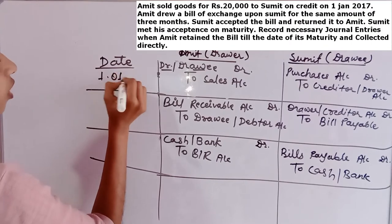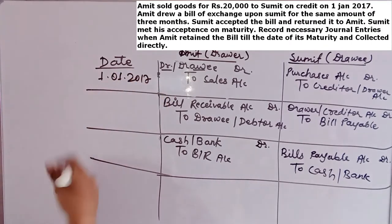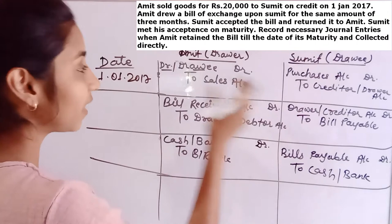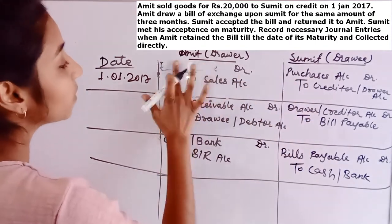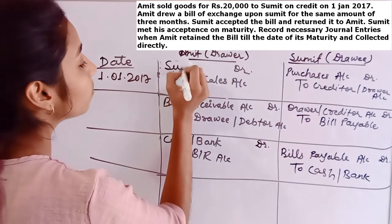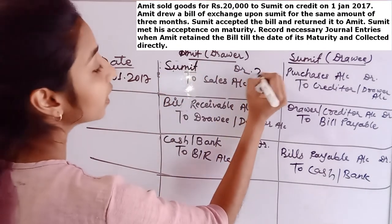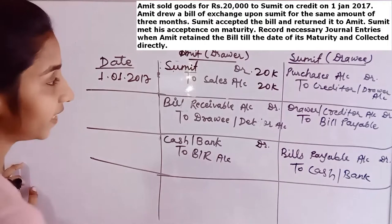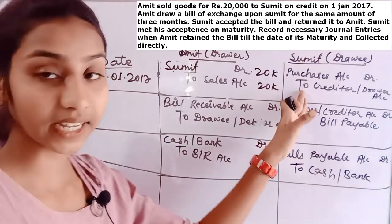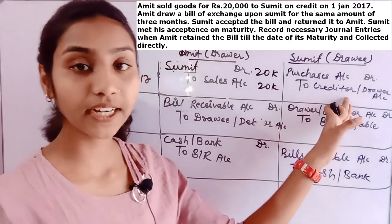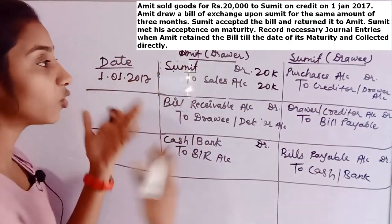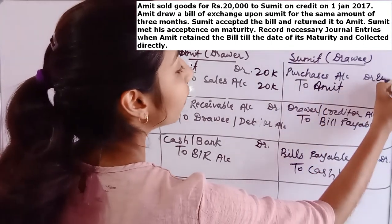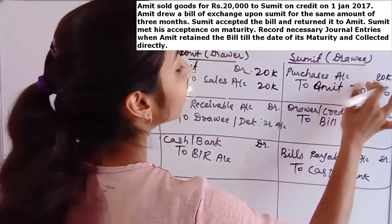First entry — 1st January 2017. Sell: you have to sell goods, so Sumit will be debited. Write: Sumit Account Debit to Sales Account, 20,000 and 20,000. Narration: being goods sold to Sumit on credit. In Sumit's book: Purchases Account Debit to Amit Account — Amit is the creditor. How much? 20,000 and 20,000.